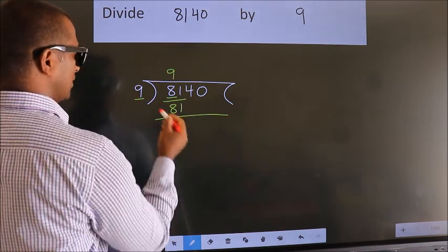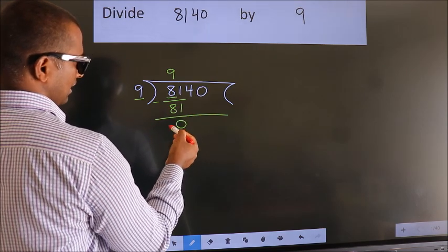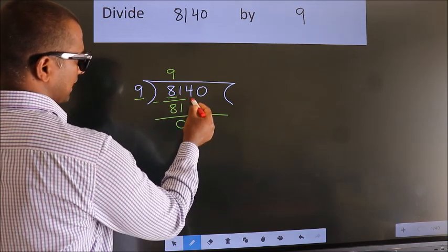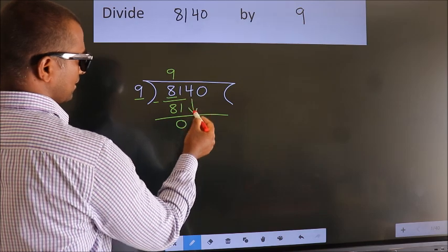Now we should subtract. We get 0. After this, bring down the beside number. So 4 down.